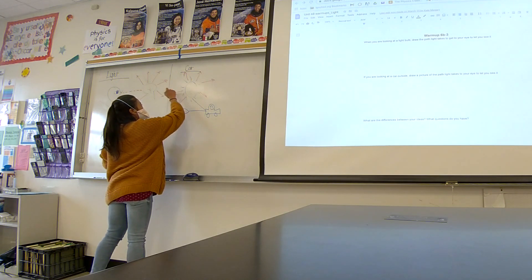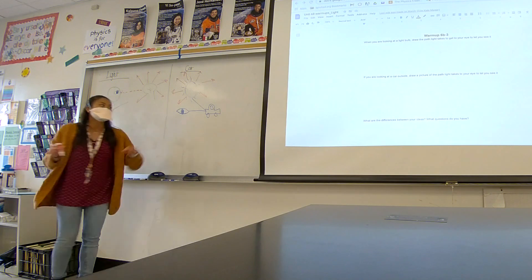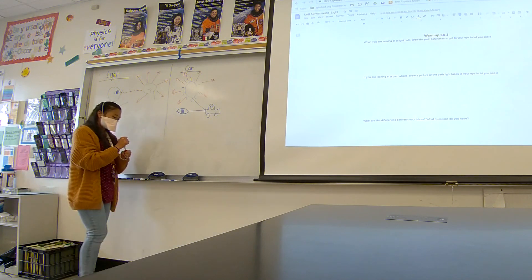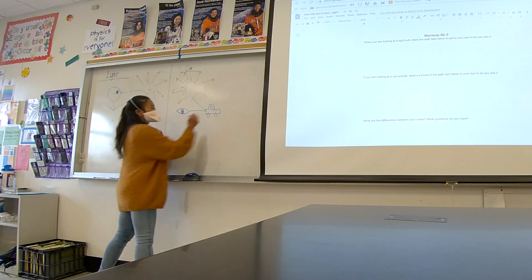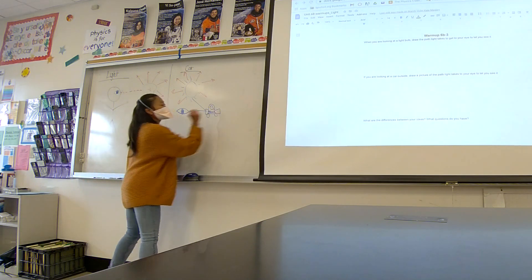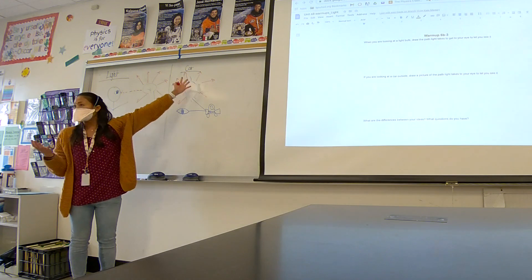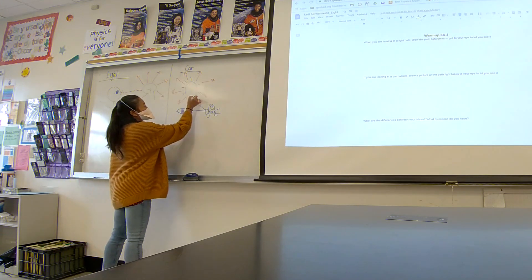The rays that hit the car are going to, so let's say my car is blue because Vincent used blue. If I have a blue car and I have white light, white light coming from the sun, this is white.